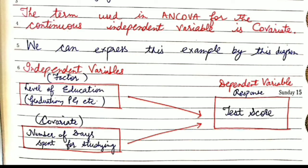Let us see an example. Here we have taken comparing test scores of students by both level of education as well as number of days spent studying. The term used in ANCOVA for the continuous independent variable is a covariate, which is a continuous independent variable.